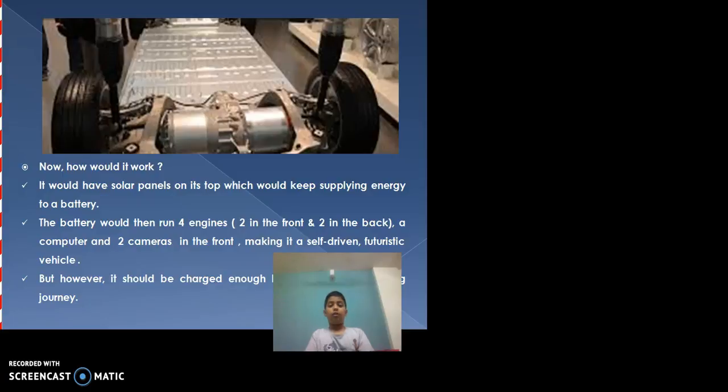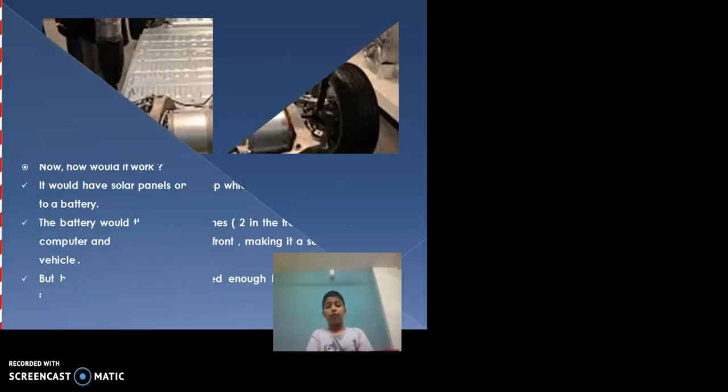Now, how would it work? It would have solar panels on its top which would keep supplying energy to a battery. The battery would then run four engines, a computer, and two cameras in the front, making it a self-driving futuristic vehicle.